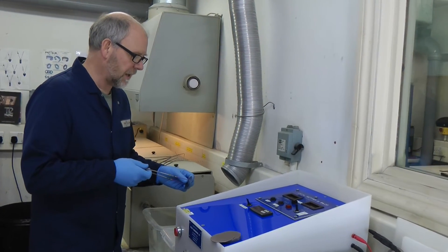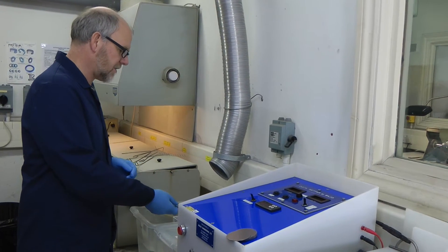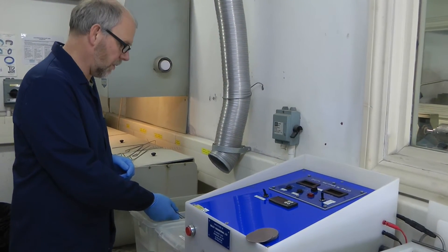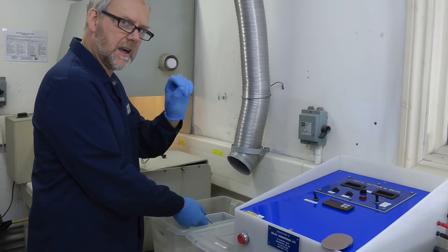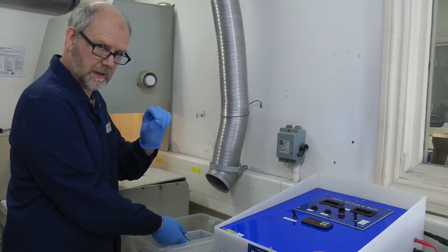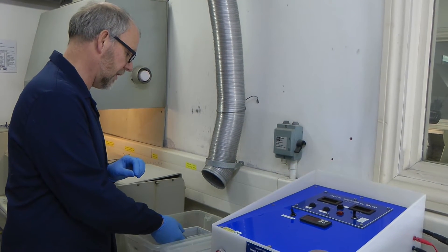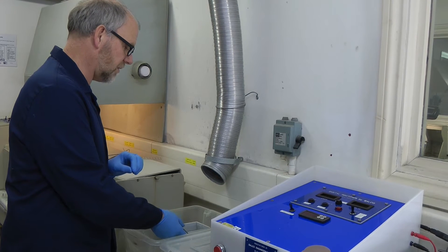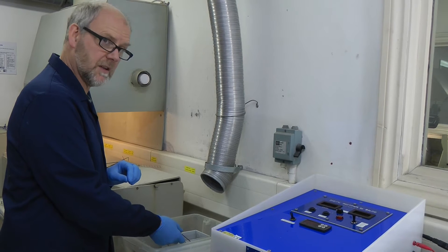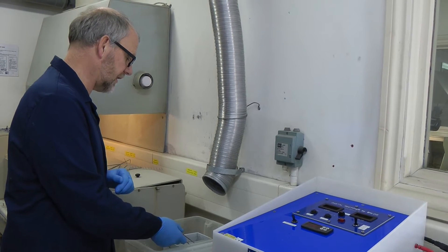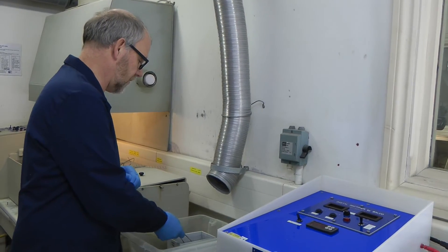The first part of the process is to etch the material. What we're doing is we're taking off tiny, microscopically thin surface oxide which forms on titanium as soon as it's exposed to oxygen. This is a means of preparing the surface ready for the colouring process later on in the stages that we go through.